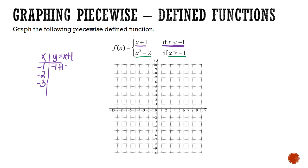Negative 1 plus 1 is 0. Negative 2 plus 1 is negative 1. And negative 3 plus 1 is negative 2. Now I can graph this function. At x equals negative 1, we're going to have an open circle because this is strictly less than — so negative 1 maps to a y value of 0. Negative 2 is at a y value of negative 1. And negative 3 was at negative 2. We'll put an arrow at the end because this is for all x values less than negative 1.